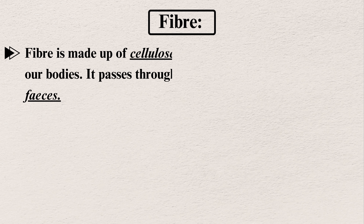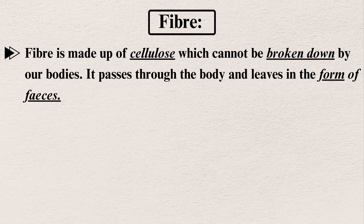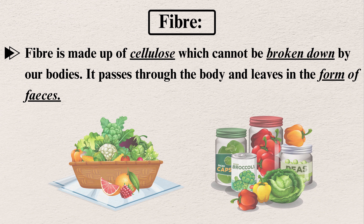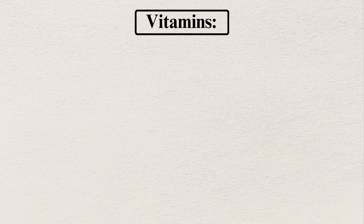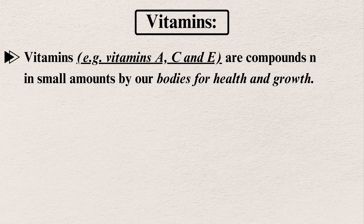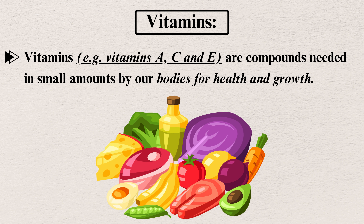Fiber is made up of cellulose, which cannot be broken down by our bodies. It passes through the body and leaves in the form of feces. Vitamins — for example, vitamins A, C, and E — are compounds needed in small amounts by our bodies for health and growth.